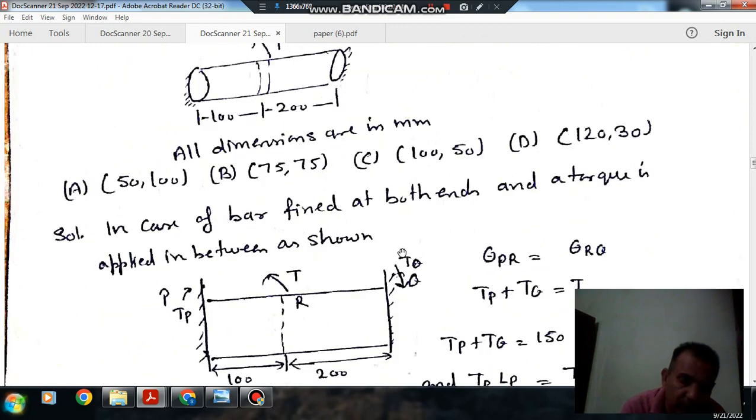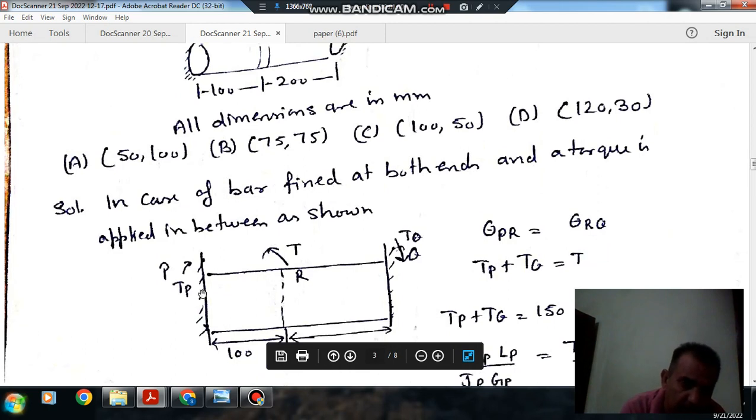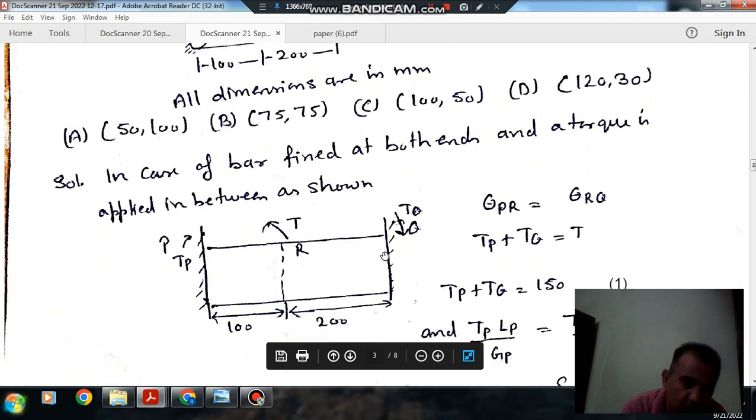As the bar is fixed at both ends and torque T is applied in between, Tp is the reaction at P and Tq is the reaction at Q. In this case, the angle of twist in this part and the angle of twist in that part will be the same.